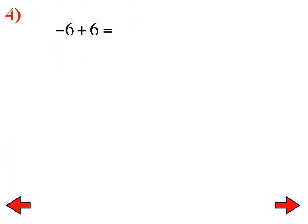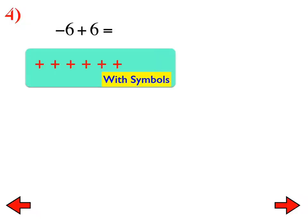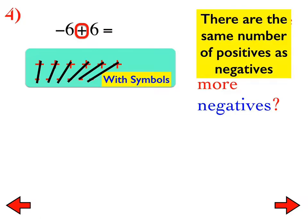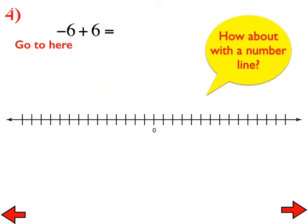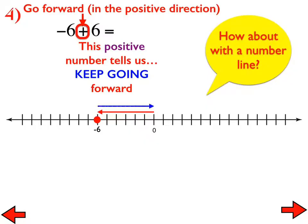Number four: -6 + 6. We start with six negatives and add six positives. We have six zero pairs. The sum is zero because we have an equal number of positives and negatives. With the number line, we start at zero, go out to negative six, but then we have to turn around and go the other way because the second number is positive. The entire graph is overlapped — that's why we have six zero pairs.